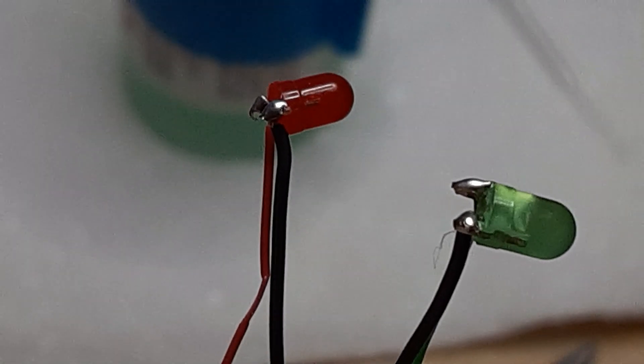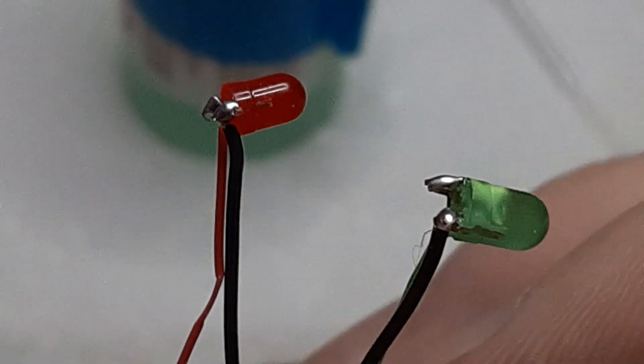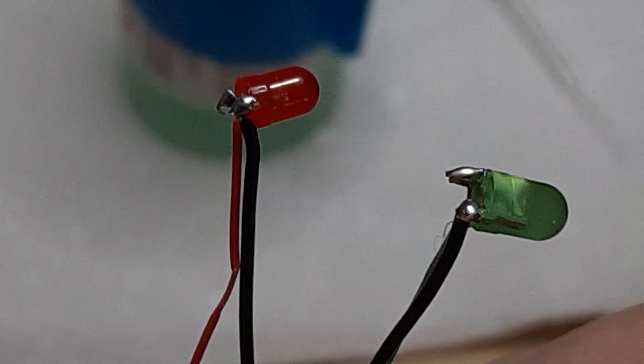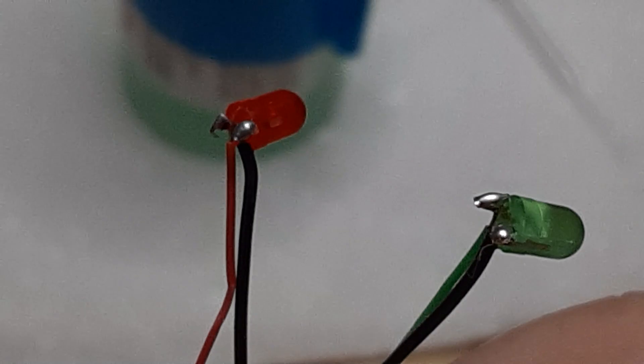Solder a short length, say about six inches, of black wire to each lead. Then solder the free ends of those two black wires together.